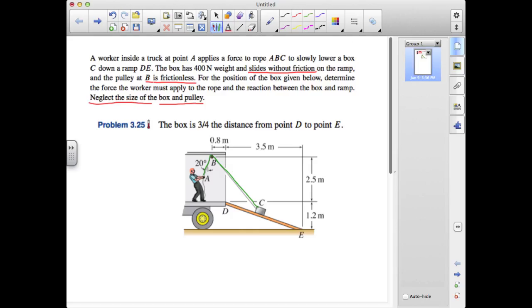We're also told that the box slides without friction, and this is going to be important for our representation of a reaction between the box and the ramp. The presence of a reaction would indicate whether or not a degree of freedom was being prevented or impeded. And the fact that the box slides without friction means that there is nothing impeding its progress between D and E.